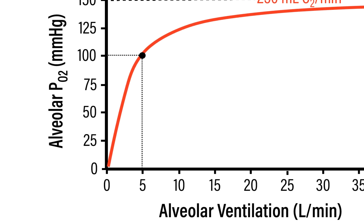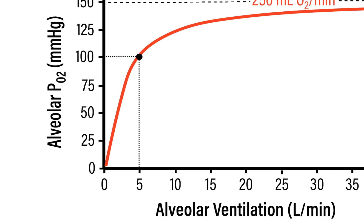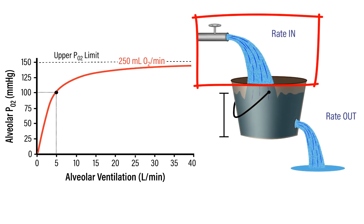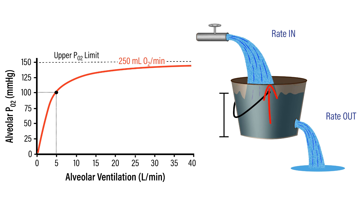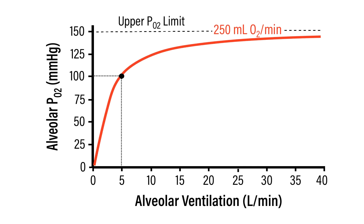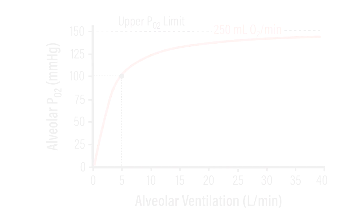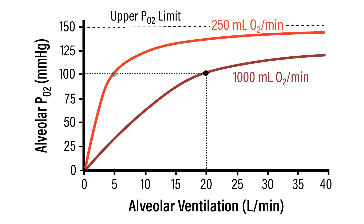Conversely, beginning from 5 liters per minute, if you increase the rate of alveolar ventilation, this increases the alveolar PO2. Note that there is an upper limit for the partial pressure of oxygen, which is determined by the atmospheric partial pressure of oxygen. What happens to this relationship when the rate of oxygen consumption increases, in this case to 1,000 milliliters of O2 per minute, which would be representative of an increase in aerobic activity resulting in increased oxygen consumption?